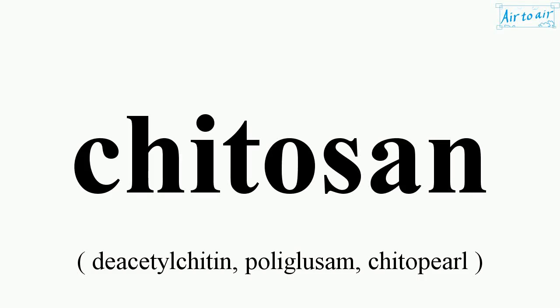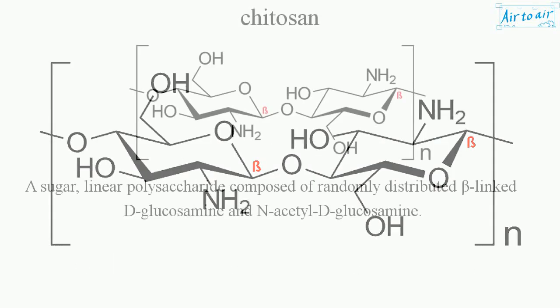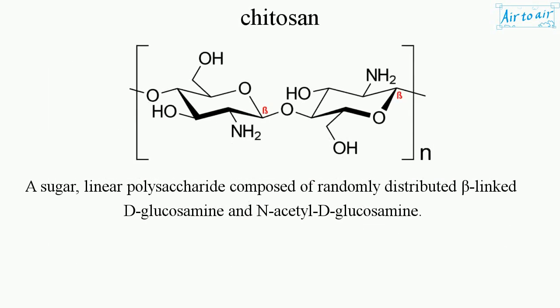Chitosan. A sugar, linear polysaccharide composed of randomly distributed beta-linked D-glucosamine and N-acetyl D-glucosamine.